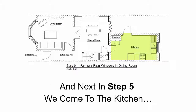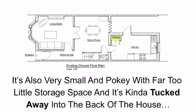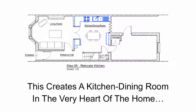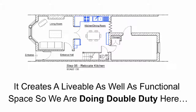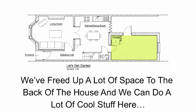Next, in step 5 we come to the kitchen. The kitchen area is functional for cooking but not a place to hang out in. It's also very small and pokey with far too little storage space, tucked away into the back of the house. So here is the big move — we are going to move the kitchen to where the dining room is currently located. This creates a kitchen-dining room in the very heart of the home: a liveable as well as functional space doing double duty, making one area multifunctional — a place to cook, a place to eat, and a place to hang out in. We've freed up a lot of space to the back of the house and we can do a lot of cool stuff here.